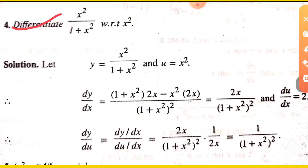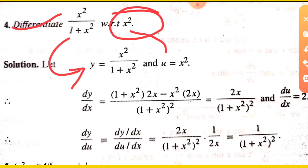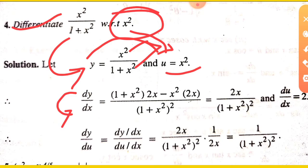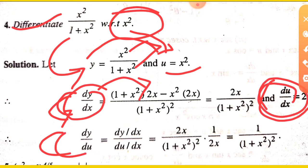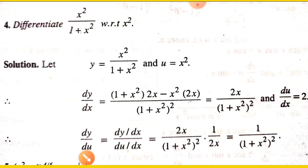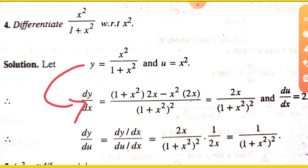Next: differentiate x squared upon (1 + x) with respect to x squared. Here y is x squared upon (1 + x), and u is x squared. Find dy upon dx, then du upon dx, which is 2x. Then divide to get dy upon du. Clear? If y is with respect to x and u is with respect to x, that gives us 2x.